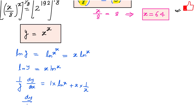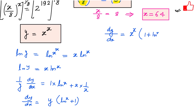Differentiating both sides: 1 over y times dy over dx equals ln x plus x times 1 over x, which simplifies to ln x plus 1. Therefore dy over dx equals y times the quantity 1 plus ln x. Substituting y equals x raised to the power x gives dy over dx equals x raised to the power x times the quantity 1 plus ln x. Setting this to zero gives ln x equals negative 1, so x equals e raised to the power negative 1, that is x equals 1 over e.